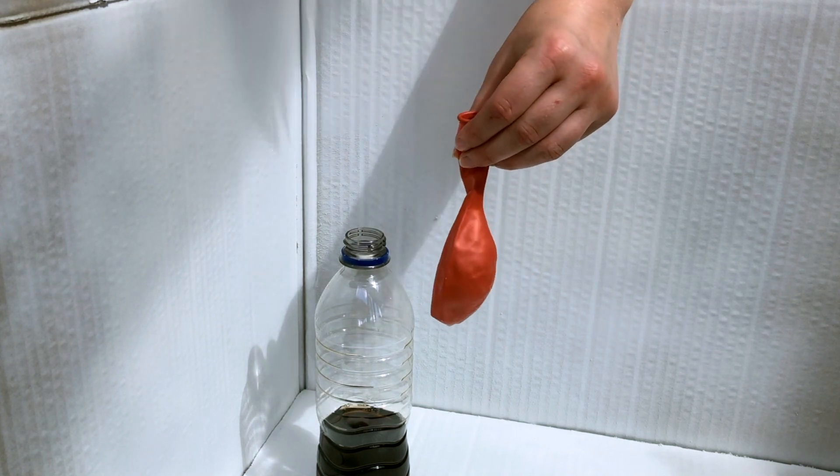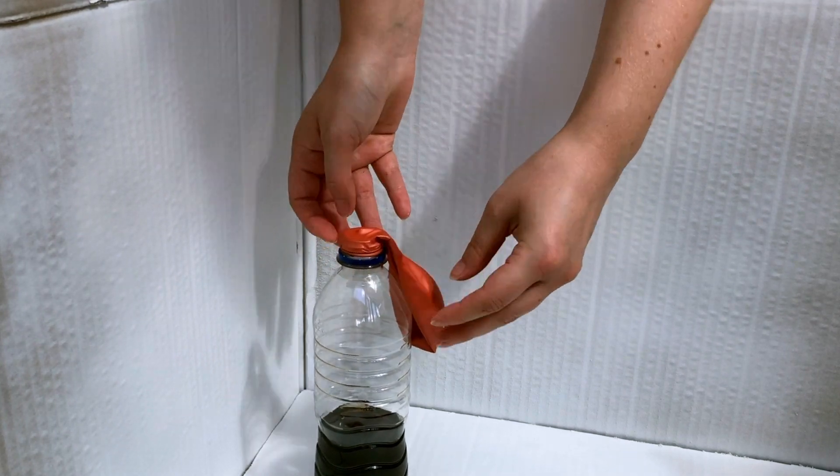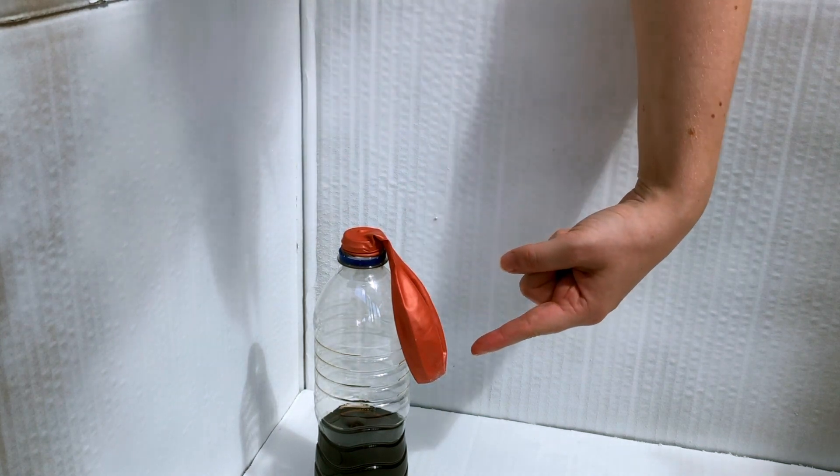Step four, this is a little tricky and you might need a grown-up to help. Put the balloon opening over the bottle opening like this. Make sure that the big bit of the balloon is hanging down the side.